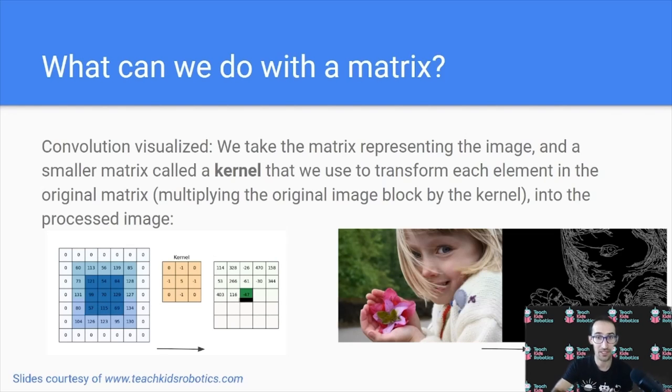This submatrix is known as a kernel, and different kernels allow us to perform different operations on the image, such as performing image blurring, or border detection, or sharpening.